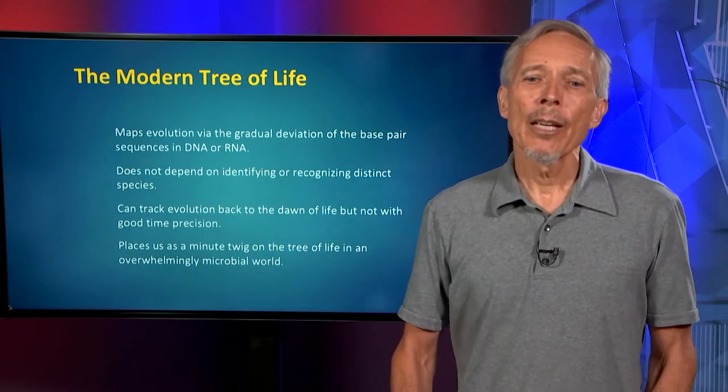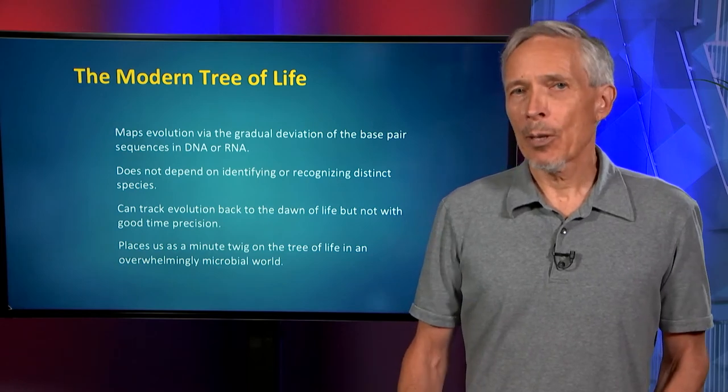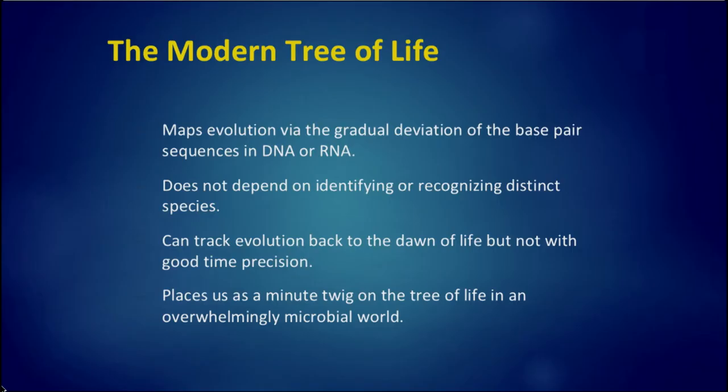The modern tree of life is mapped out using genetic material — DNA or RNA — and what we see is basically the gradual deviation of the base pair sequences in the genetic material. Doing it with genetic material means we do not have to depend on recognizing distinct species. The tree of life can only be constructed using body fossils for about half a billion years, but with genetic material it can be reconstructed in principle all the way back to the origin of life, perhaps four billion years ago.